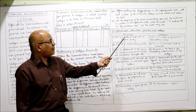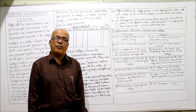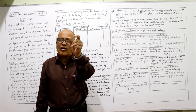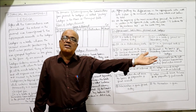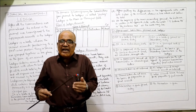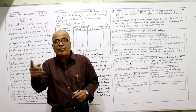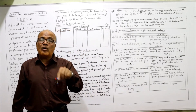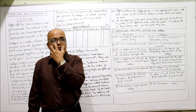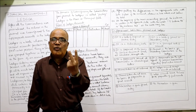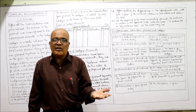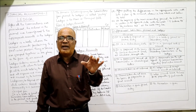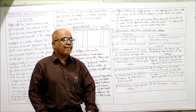Whereas ledger is called a secondary book, because transactions are recorded in ledger only after being recorded in journal. However, ledger is also called the book of final entry because there is no other book after the ledger — the amounts from ledger go directly to the financial statements.